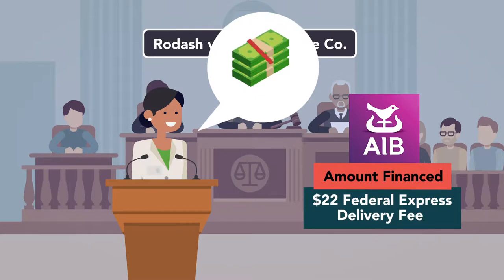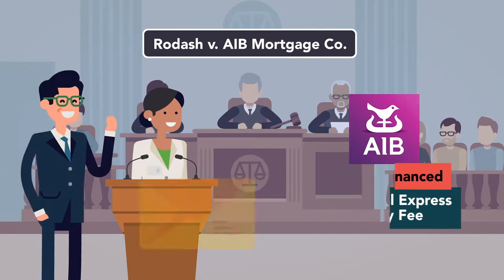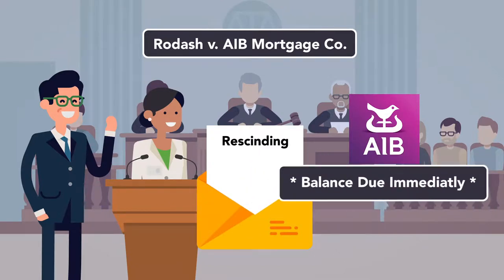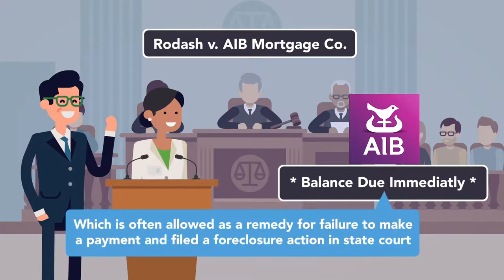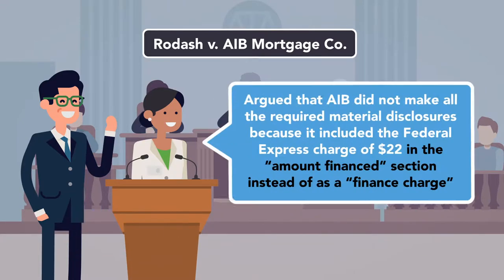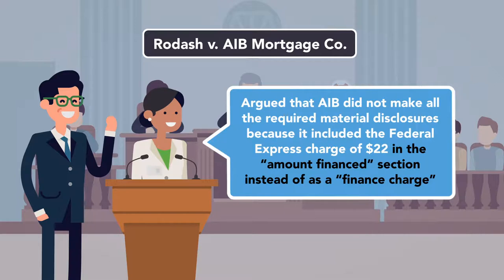Rodash stopped making her mortgage payments as of July 1, 1991, and on December 26, 1991, Rodash's attorney wrote a letter stating that she was rescinding the transaction under the Truth in Lending Act and seeking statutory penalties, including the cancellation of the mortgage. The lender accelerated the balance due under the note, which is often allowed as a remedy for failure to make a payment, and filed a foreclosure action in state court. Rodash argued that AIB did not make all the required material disclosures because it included the Federal Express charge of $22 in the Amount Financed section instead of as a finance charge.